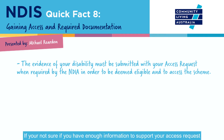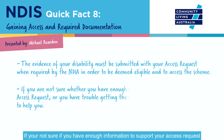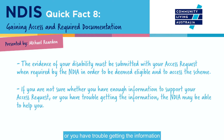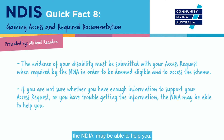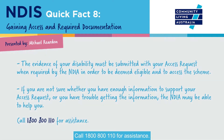If you're not sure whether you have enough information to support your access request, or you have trouble getting the information, the NDIA may be able to help you. Call 1800 800 110 for assistance.